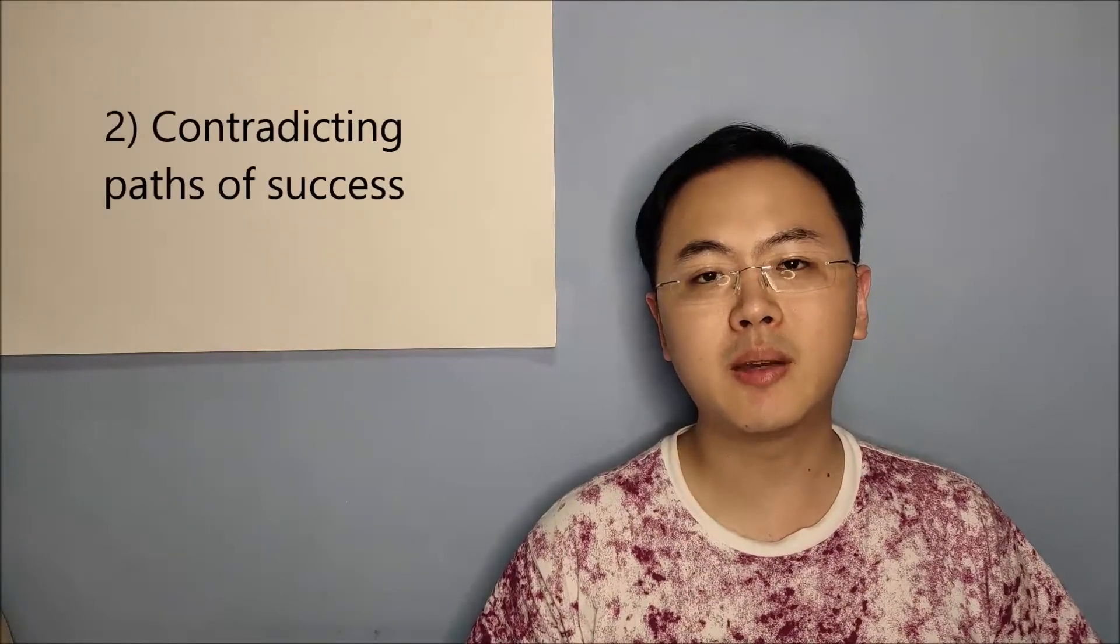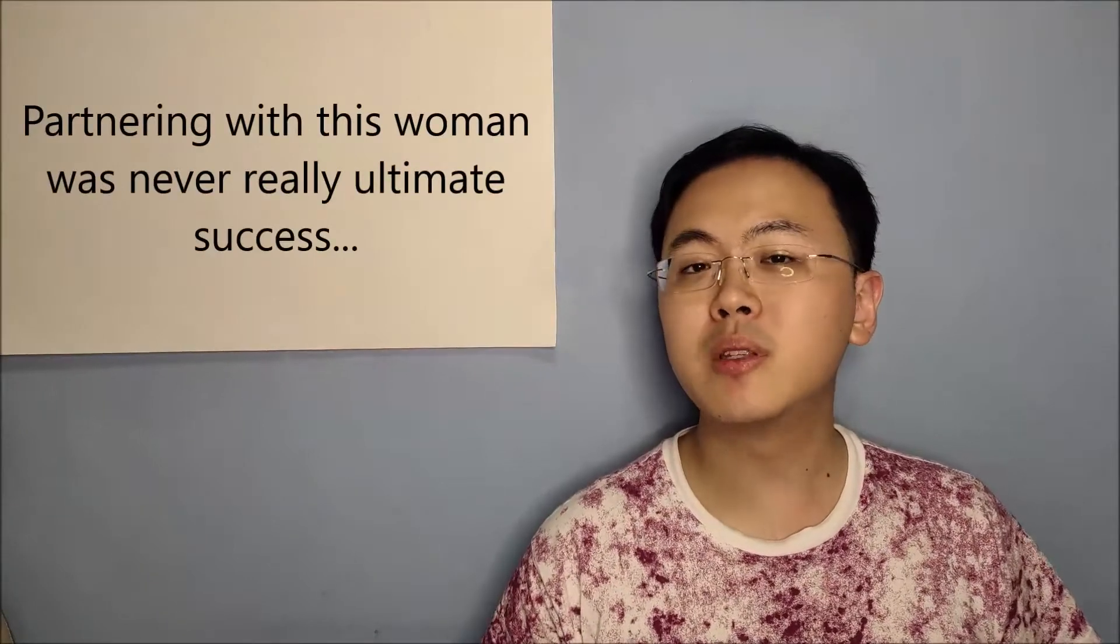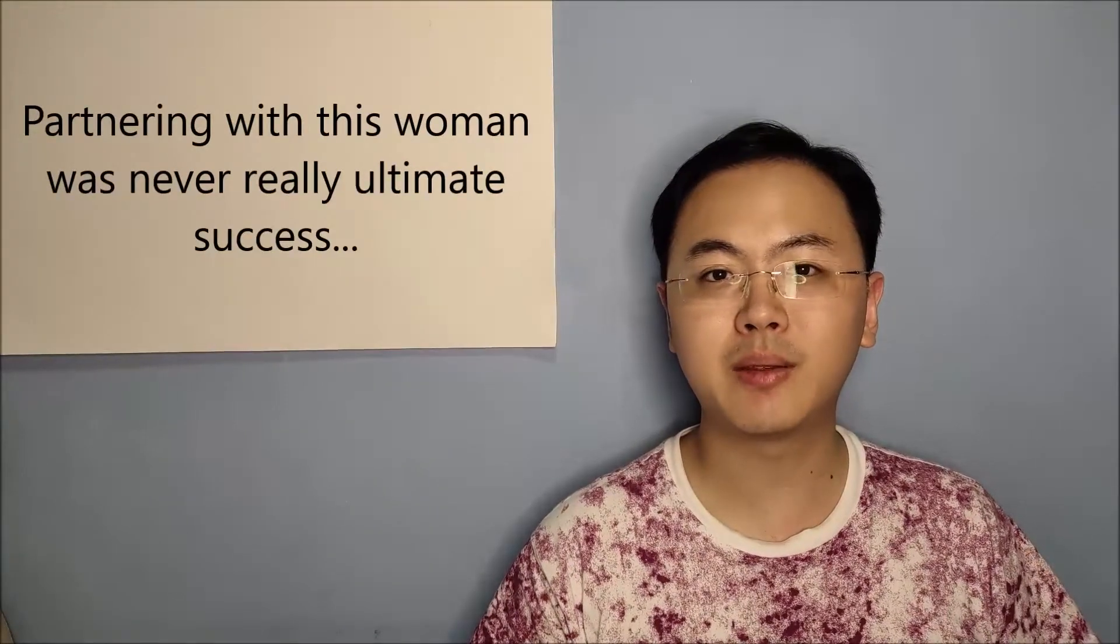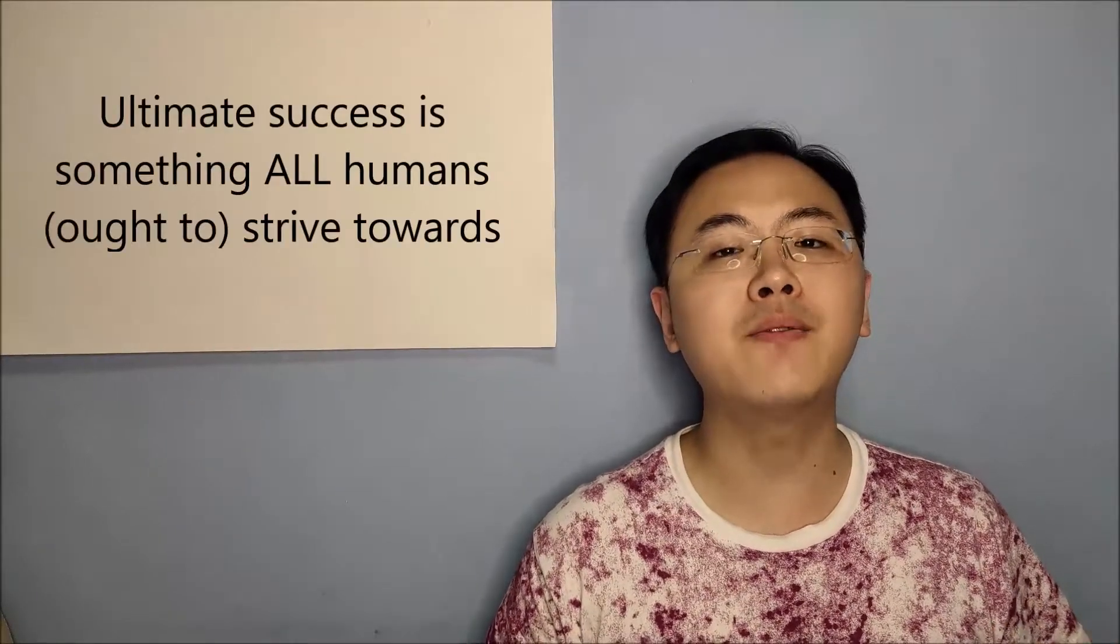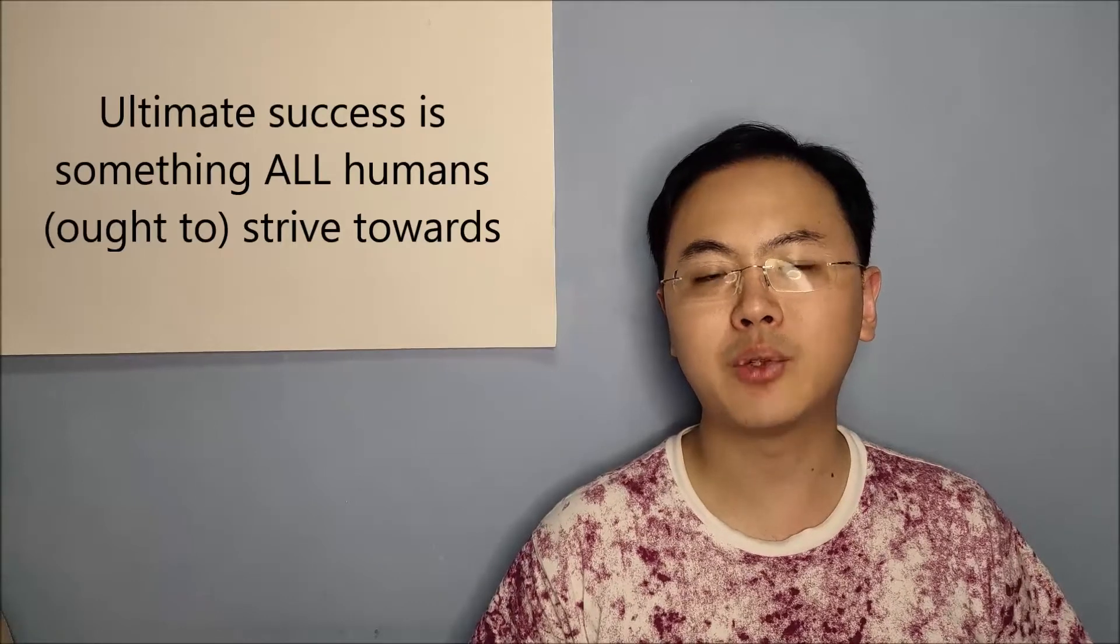But let's talk about contradicting paths to success. Here's a really simple one. Two guys like the same woman, but only one of them can get her. The person who is able to end up with her would then be considered to be successful, whereas the other person would not be considered successful. And so if this is the case, then partnering up with this woman was never ultimate success to begin with. Because only one person could attain it, whereas the ultimate success has to be something that every single person can strive towards.